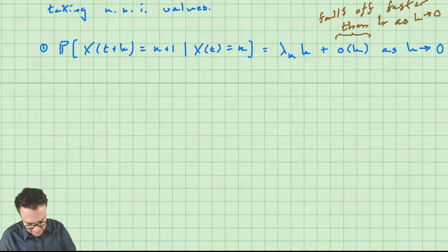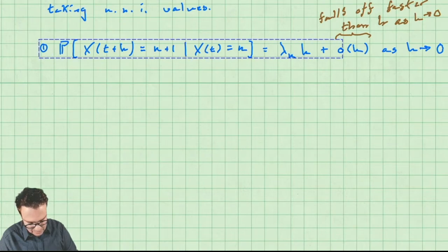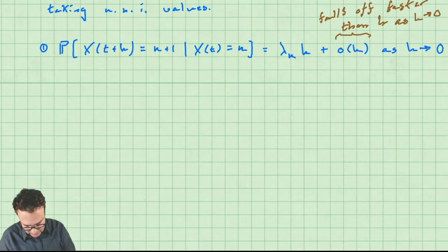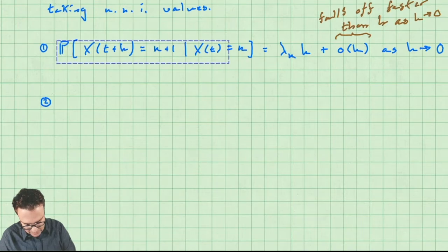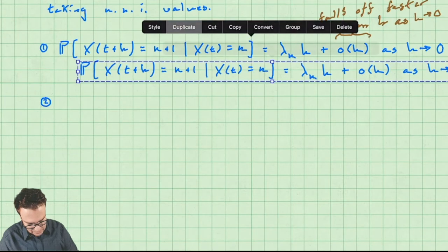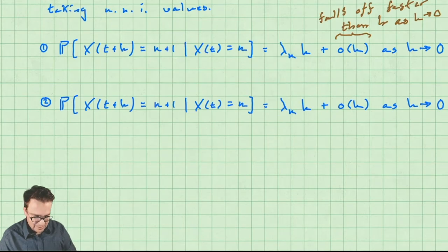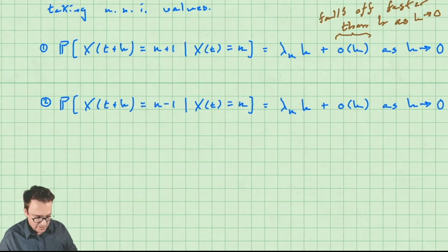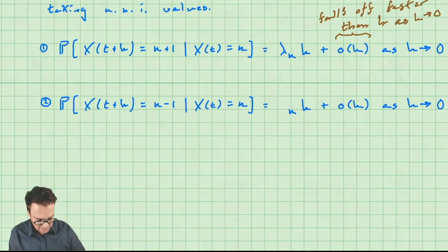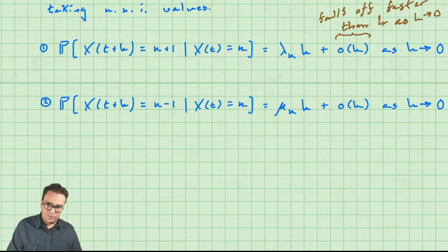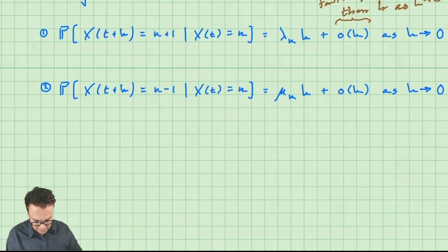Property two is for a death event. The death event is the same structure but instead of going up by one, you go down by one. The rate isn't necessarily the same — it's not lambda. We allow it to be something different and call it mu sub n. It's important to remember there's an n on it; the rates can change depending on the current state. So that's a death event.